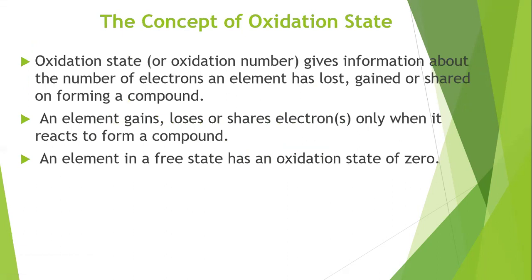We'll start with the concept of the oxidation state. The oxidation state, or oxidation number, gives you the information about the number of electrons an element has just lost, gained, or shared on forming the compound. An element gains, loses, or shares electrons only when it reacts to form a compound.